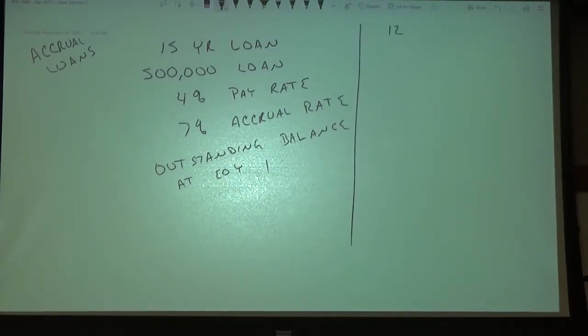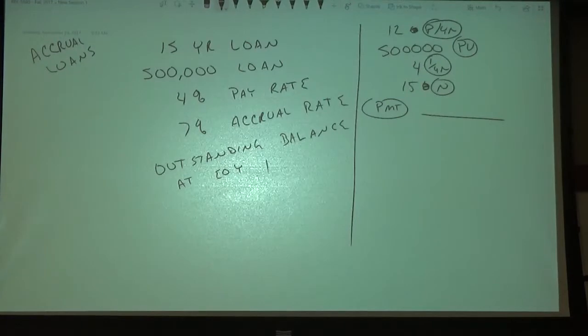Does that make sense? Okay, so let's just see if you can do it. All right, 12 payments per year, $500,000, 4%, 15 years. Get the payment, so we get the payment of $3,698.44.